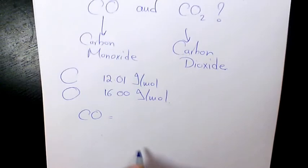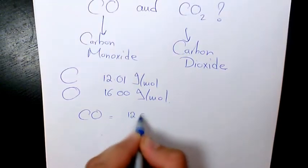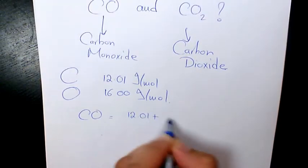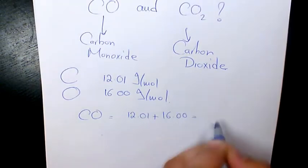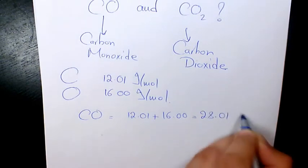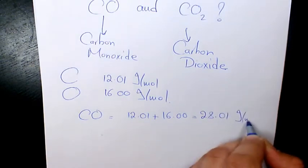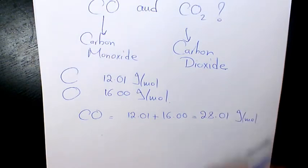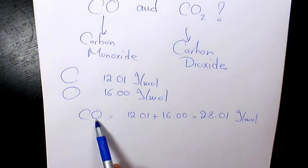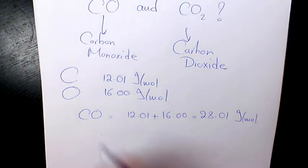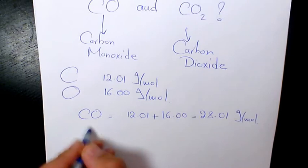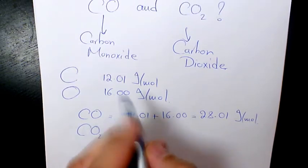For carbon monoxide, because we have one of each, we simply add these two together. That's going to give us 28.01 grams per mole. It means that one mole of carbon monoxide has 28.01 grams of carbon monoxide.